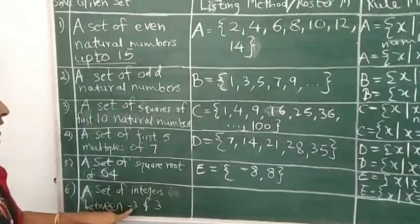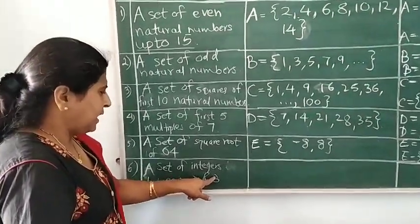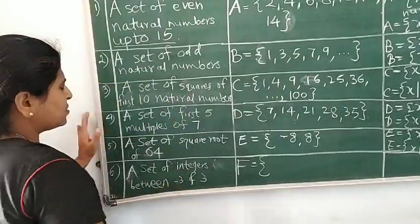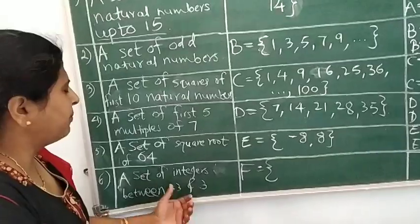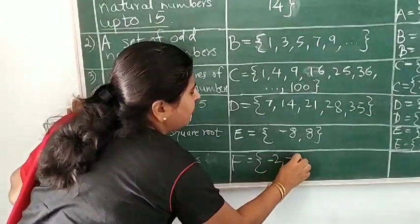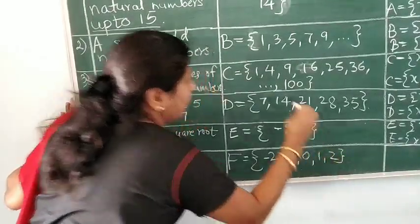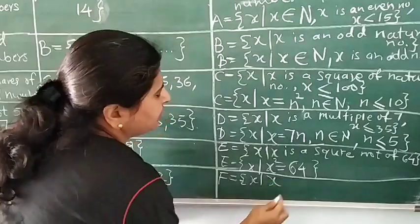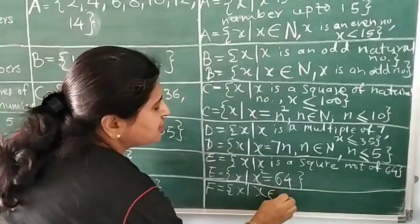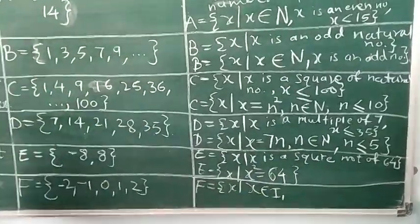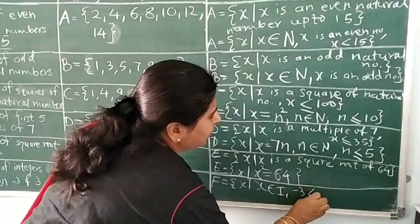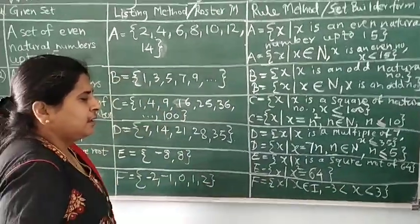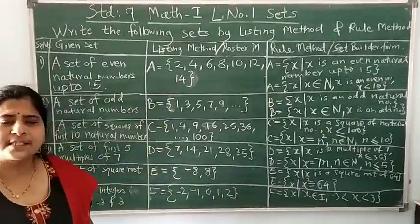Now let's go to the last example: a set of integers between minus 3 and 3. Integers starting from minus 3 — let's call it set F. 'Between' these two numbers means we don't want minus 3 and 3 themselves. So skipping those two, we take the numbers in between: minus 2, minus 1, 0, 1, and 2. Using rule method in symbolic form: F is the set of all X such that X belongs to I — where I means the set of integers — and X is between minus 3 and 3, written as minus 3 is less than X is less than 3. In this way we can write the set in rule method, also called set builder form.